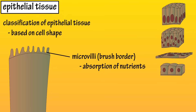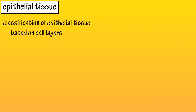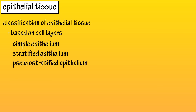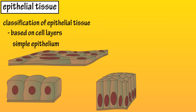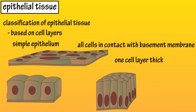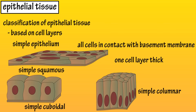Microvilli help to increase the surface area for digesting and absorbing nutrients in the intestine. Based on cell layers, epithelial cells are classified in three different ways: simple, stratified, and pseudostratified. Simple epithelium is only one cell layer thick, and all cells are in direct contact with the basement membrane. There is simple squamous, simple cuboidal, and simple columnar epithelium.